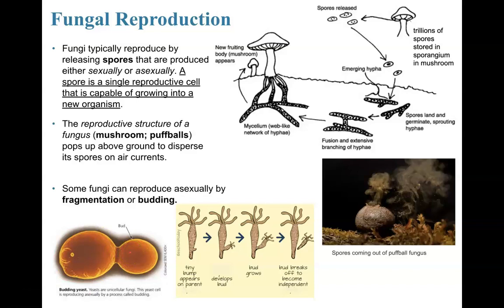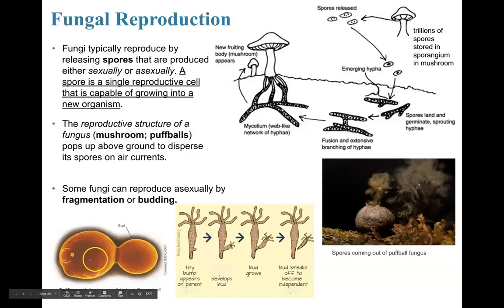Budding is different from binary fission because there isn't a complete splitting, nor do you get the same size parent and daughter cell. But it is similar in that you will have a genetically identical daughter cell being produced. Eventually more buds will form. Fragmentation is a similar process where fungi can also reproduce asexually.